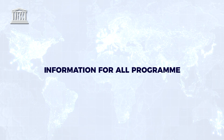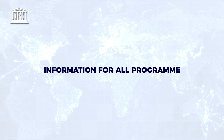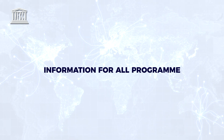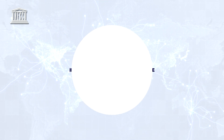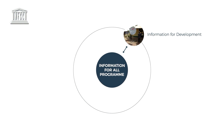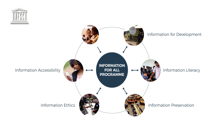The Information for All program is a UNESCO intergovernmental program that supports member states to implement information policies and knowledge strategies in a world increasingly using ICTs. The program concentrates its efforts on six priorities: information for development, information literacy, information preservation, information ethics, information accessibility, and multilingualism.